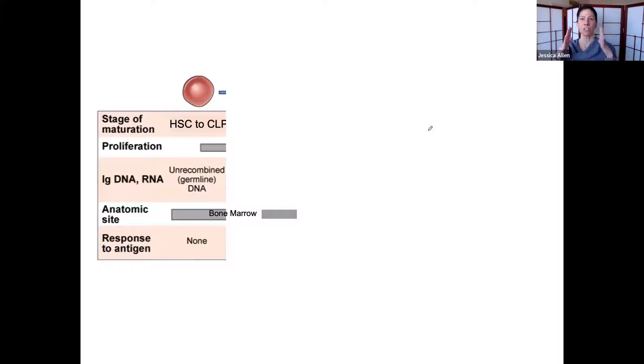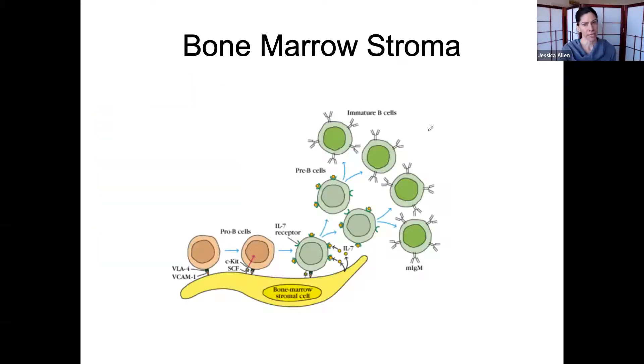Our first step is actually just deciding what stem cells are going to become B cells. This is sort of the application process, if you will, as a cell goes from an HSC, a hematopoietic stem cell, which means it can become any immune cell, to actually be chosen to become a B cell.